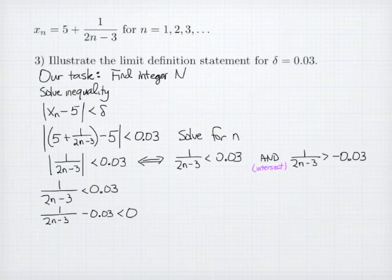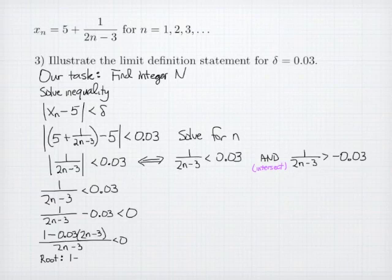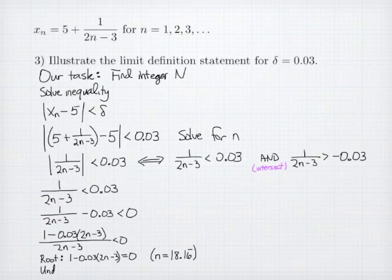And now I find a common denominator. 1 minus 0.03 times 2n-3, over 2n-3, is less than 0. There is a root where 1 minus 0.03 times 2n-3 equals 0, which, when you do the work, is found to occur at 18 and a sixth. And there's also a single undefined point, or discontinuity, where 2n-3, the denominator, equals 0, which happens at a single point, n equals 3 halves.